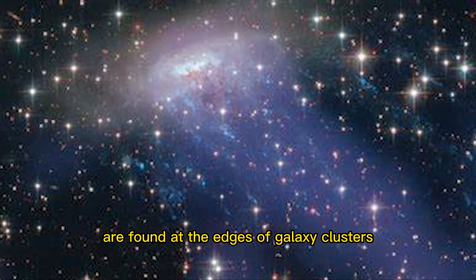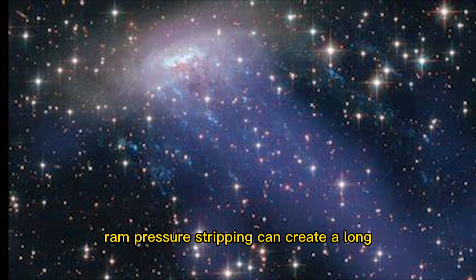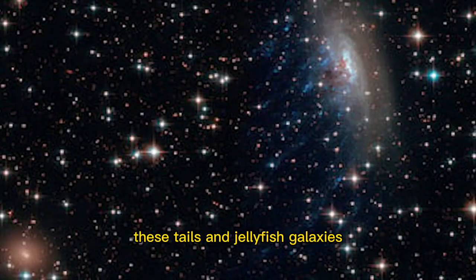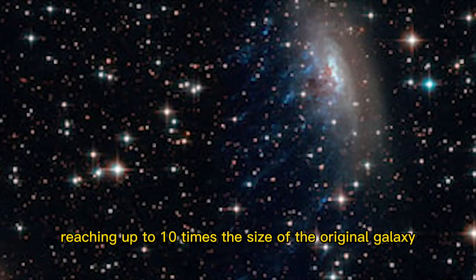Typically, these galaxies are found at the edges of galaxy clusters, and they tend to be more prevalent in younger clusters. Ram pressure stripping can create a long, trailing tail of gas and dust by removing gas from a galaxy. These tails in jellyfish galaxies can be highly elongated, reaching up to 10 times the size of the original galaxy.